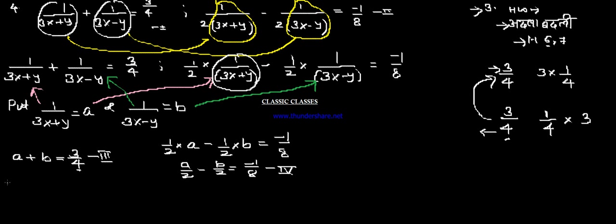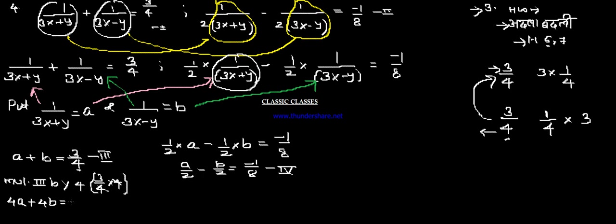What we can do is multiply equation number 3 by 4. So this gives 4a plus 4b, and 3 by 4 into 4 cancels to give 3. So equation number 5 is 4a plus 4b equals 3.